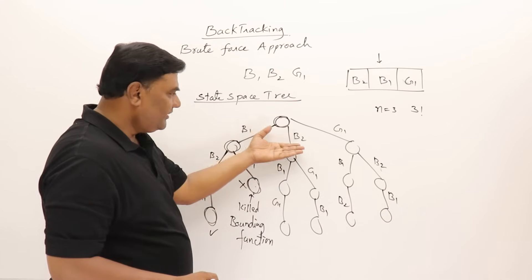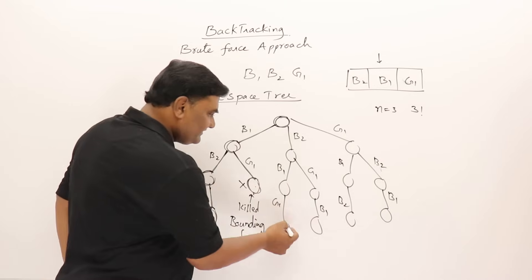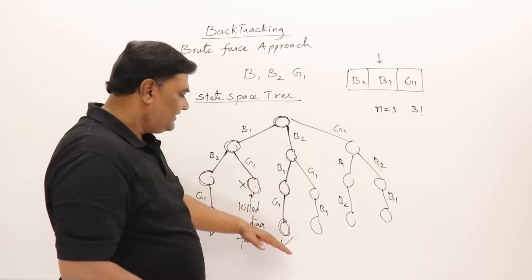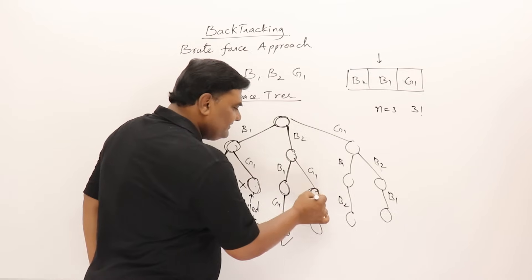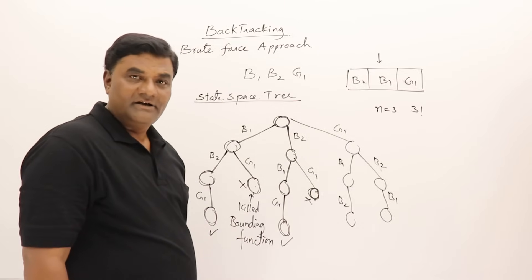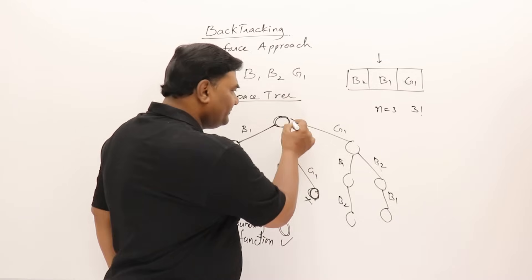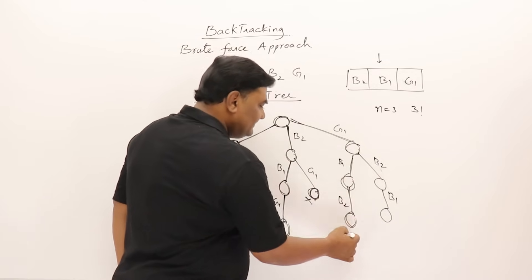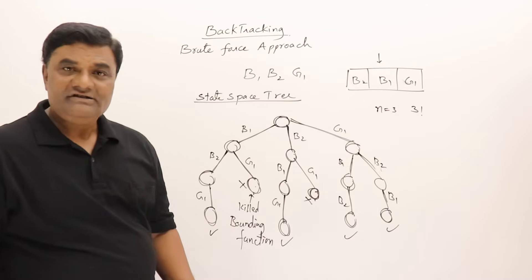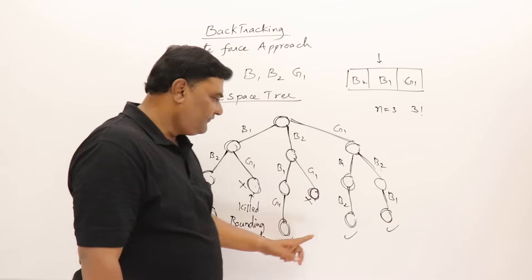Going back — boy two is sitting first, then boy one in second place, no problem; then girl one — this is also a solution. Then girl comes in second place again — kill this node by applying the bounding function. Then girl one sits first, boy in second, then boy — no problem — this is also a solution. If no bounding function is applied until you reach the last level, then you have found a solution. So in total we got four solutions satisfying the constraint.